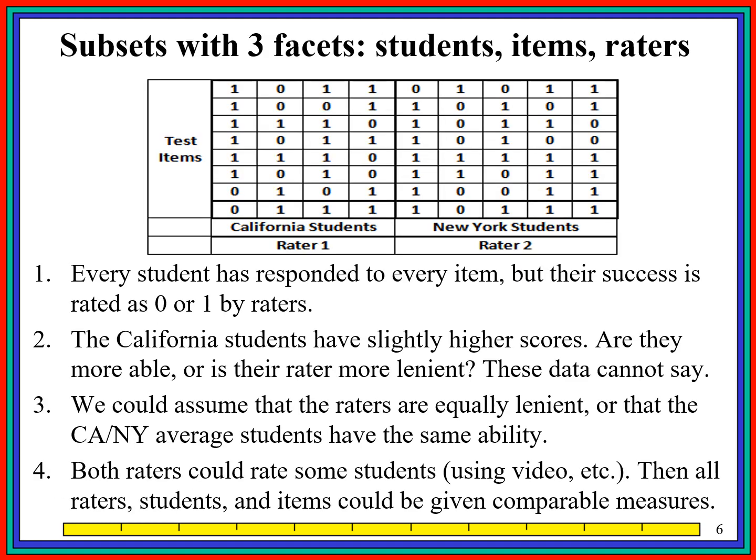Here is a situation with FACETS. Everybody's taking the same test items, which is good, but the California students are rated by rater 1 and the New York students are rated by rater 2. So now, if the California students do better than the New York students, is it because the California students are more able, or is it because rater 1 is more lenient? We just don't know from these data.